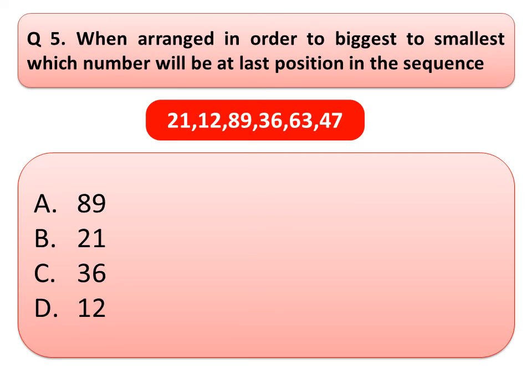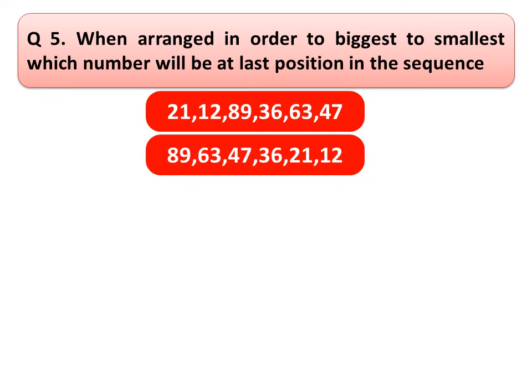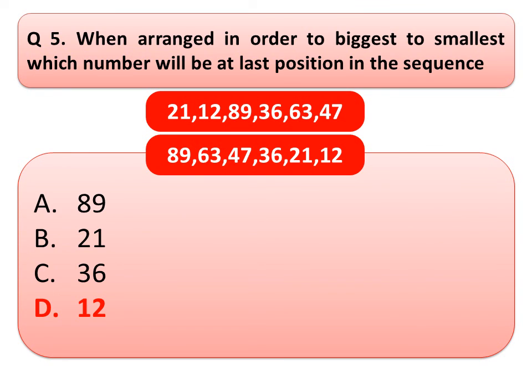And the correct answer is... Let's rearrange the numbers. In these numbers, 89 is the biggest number and 12 is the smallest number. So, the correct answer is option D. 12.